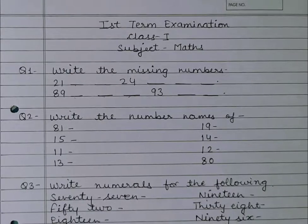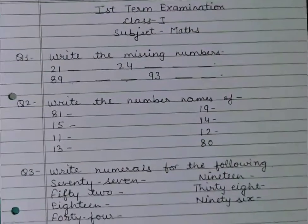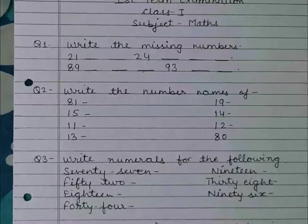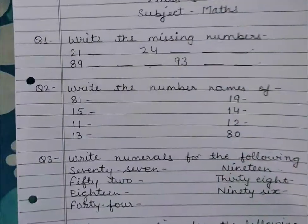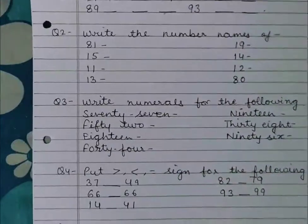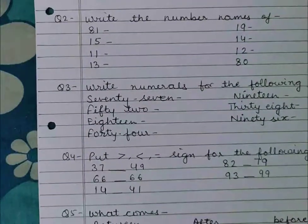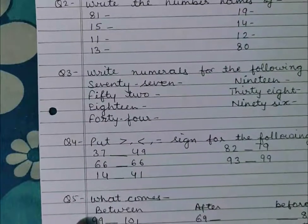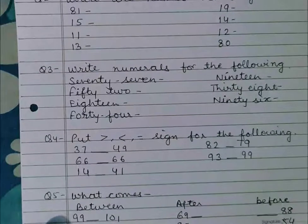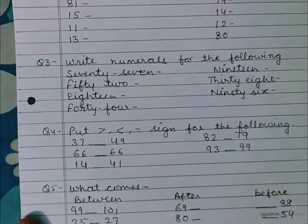First term examination, Class 1, Subject: Maths. Question number 1: Write the missing numbers. Number 2: Write the number names. Number 3: Write numerals for the following. Number 4: Put greater than, less than, and equal to signs for the following.